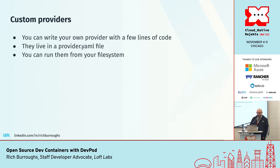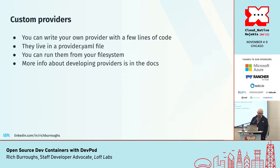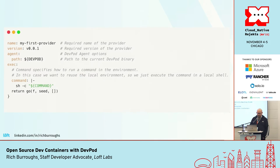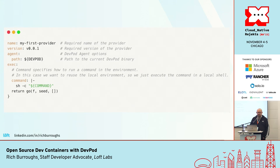You can run providers right from your file system, which is really nice. For example, if your team is developing a provider with information you don't want to be public, you just put it in a private repo and people check it out and run it locally. This is a super bare-bones example from the docs: it has a name, a version, the path to the agent, and it runs a command. Any real provider would be a bit more complex but they are very readable.